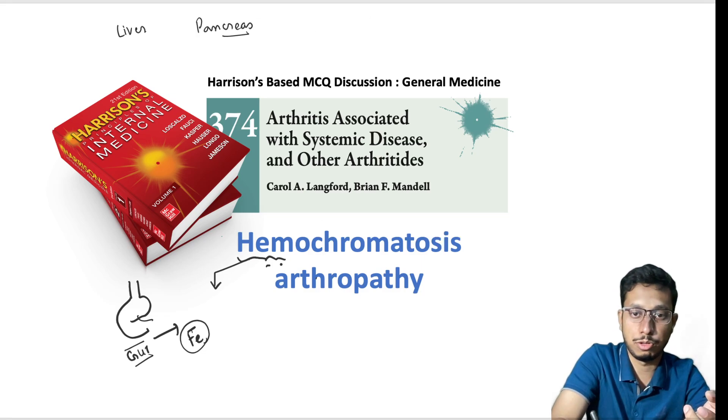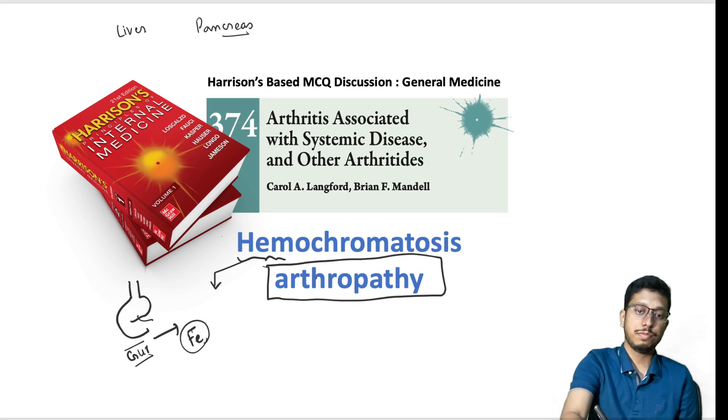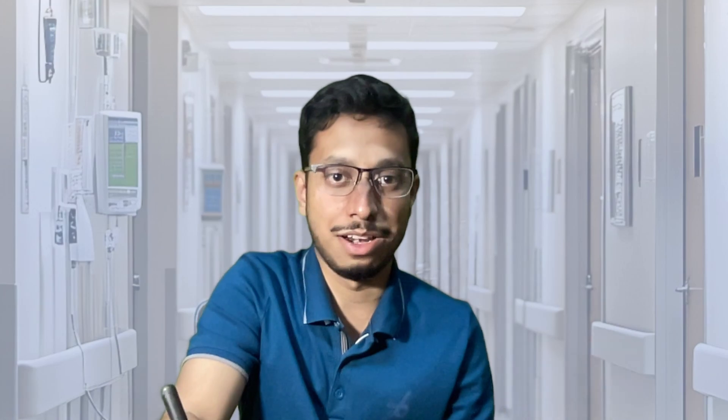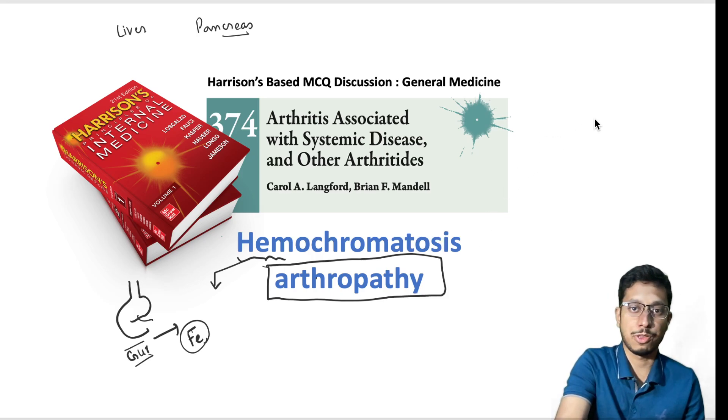The topic we are going to discuss is arthropathy. Compared to arthropathy in acromegaly — which is due to iron wear and tear — this is due to the iron excess state. The pathophysiology is different, although the presentation can be of a similar pattern. Let us now move into our first MCQ.